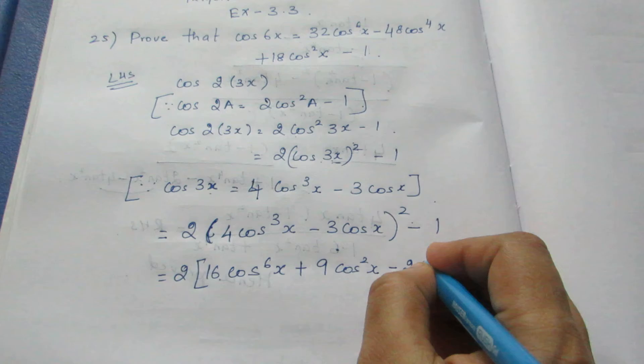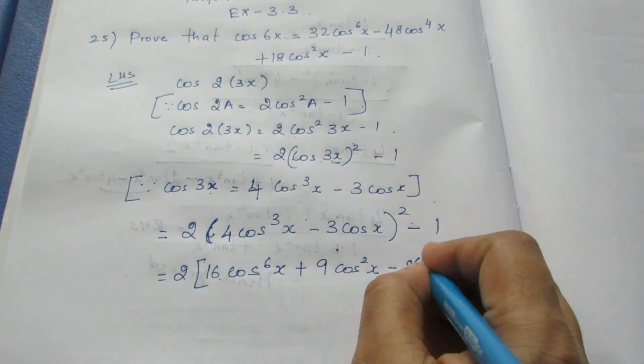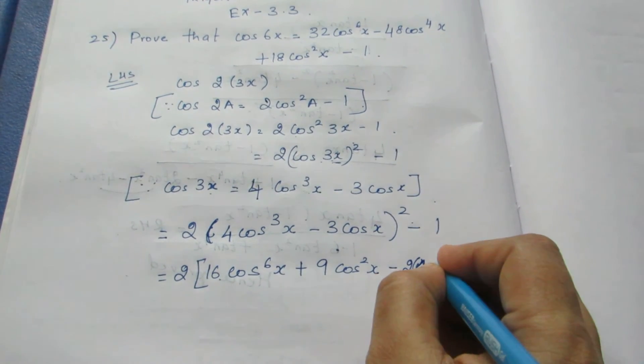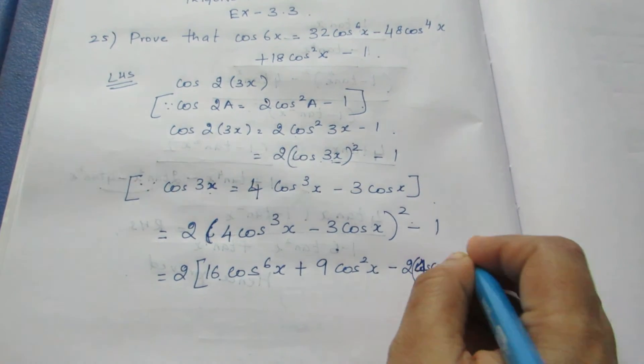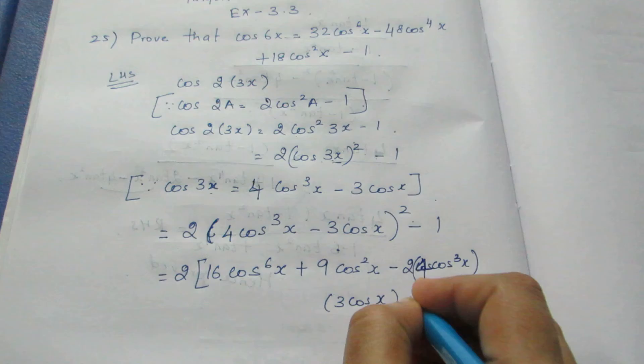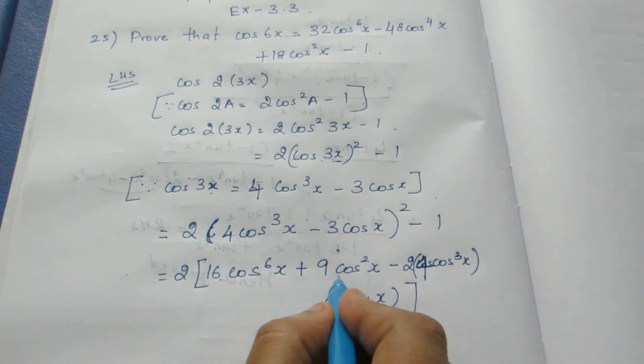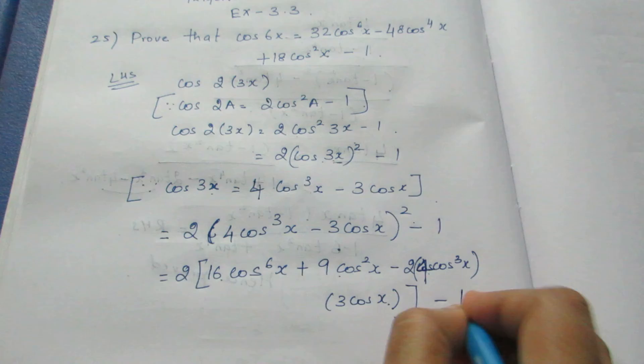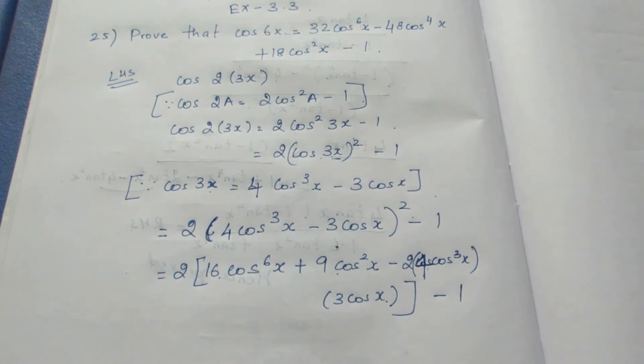I will write it as is so I can multiply later. Here it becomes 2a into b into b, which is 3 cos x. So a² plus b² minus 2ab, and this minus 1 I will write as is.